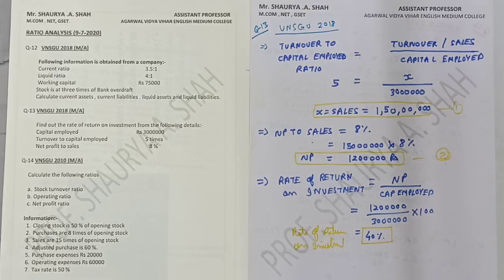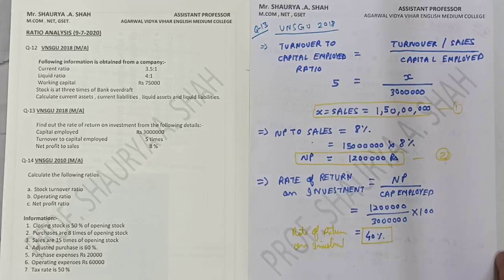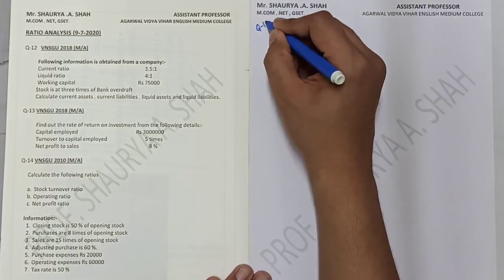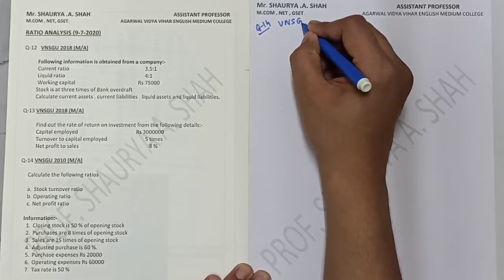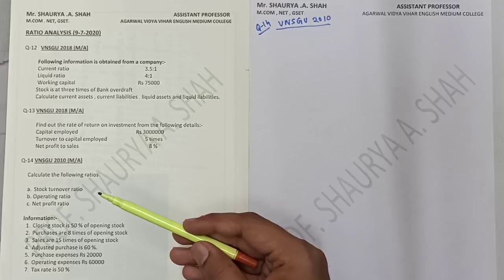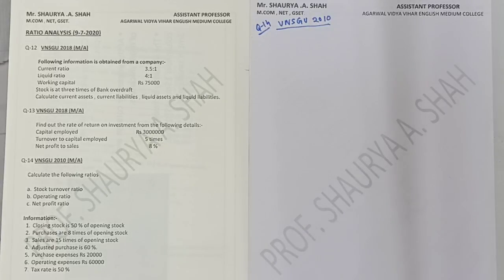Moving on to the next sum — question number 14 — VNSGU 2010. Some particulars are given; on the basis of that you need to find out three things. We will see what it is all about. You need to find out: stock turnover ratio, operating ratio, and net profit ratio.